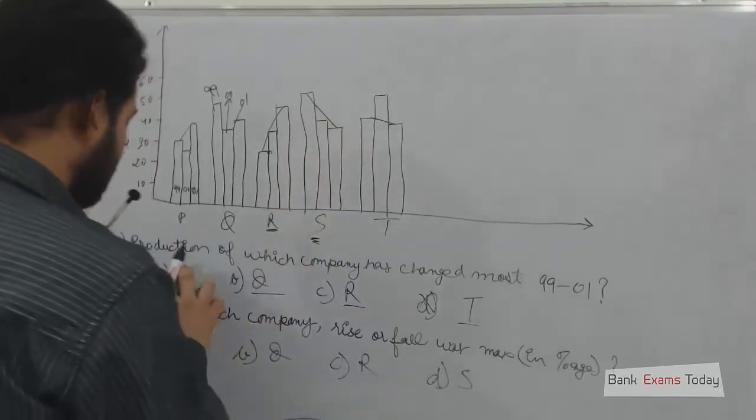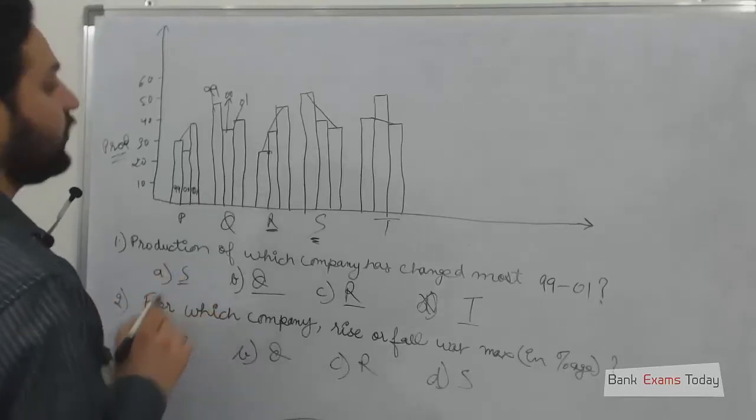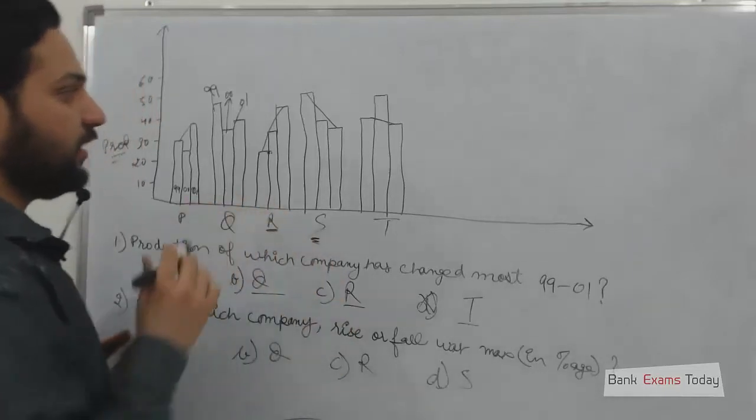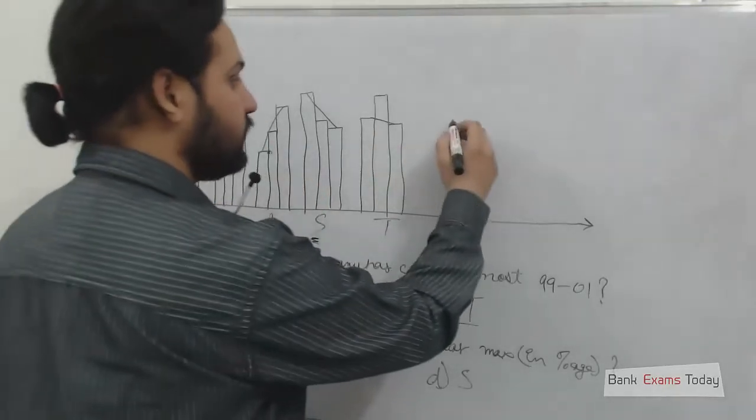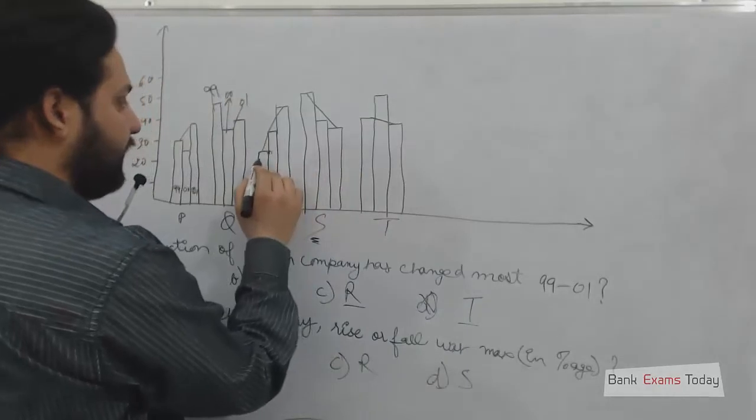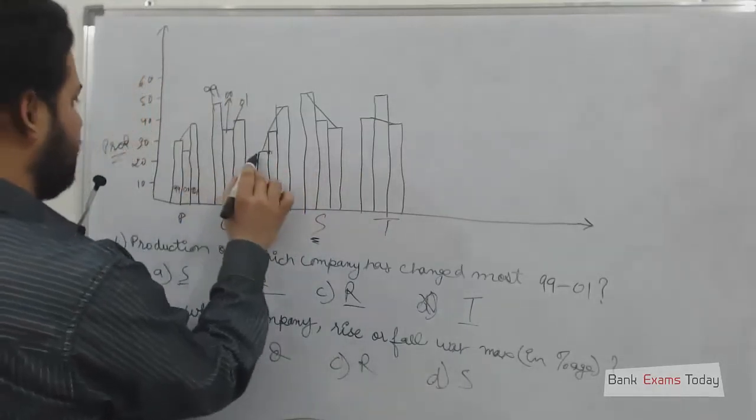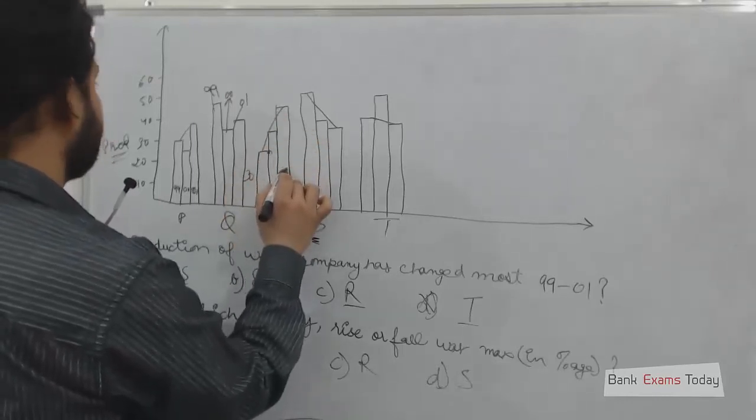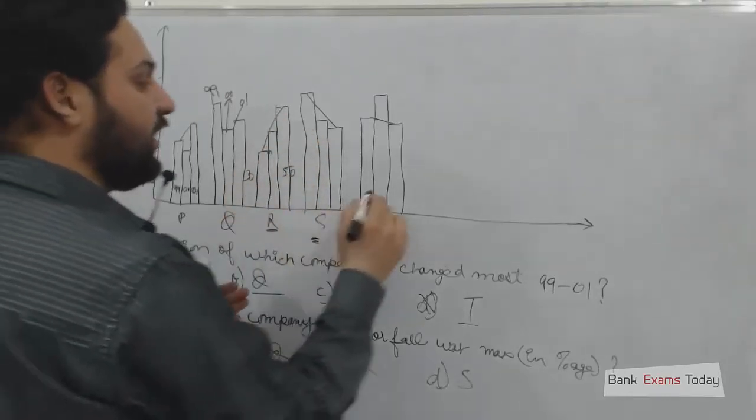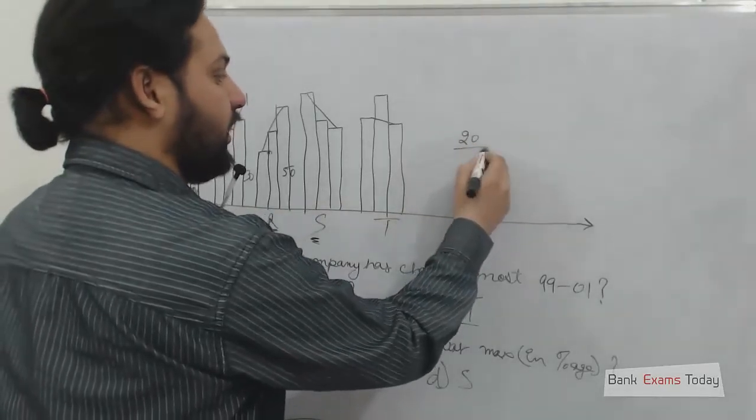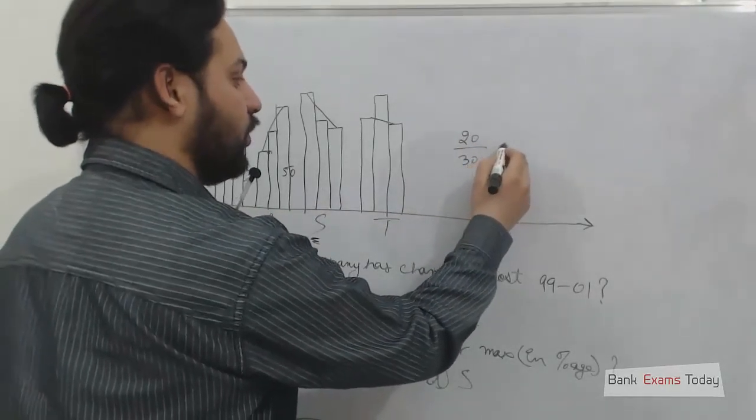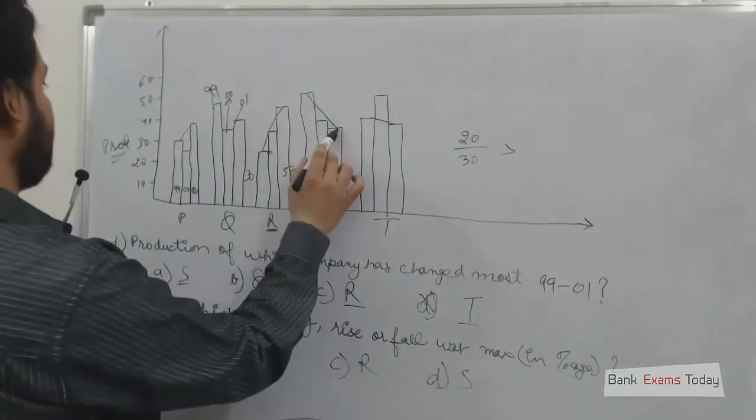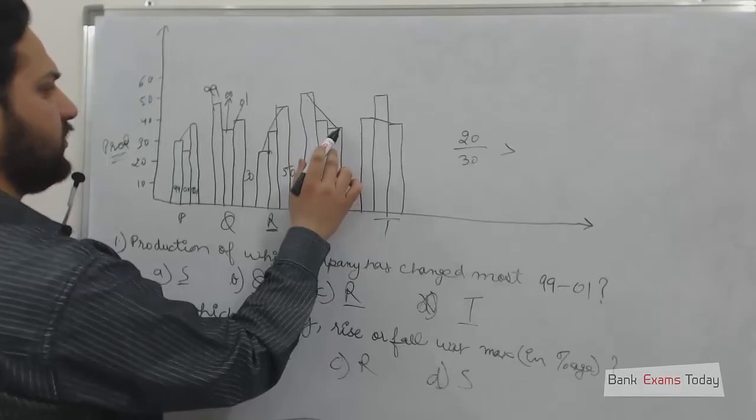Okay. If you consider company S as an option, there is a similar change. Same as I said in the starting of the video. If it is 30 and this one is 50, so there is an increase of 20. 20 of 30 is more than 50, and this one is, I think, 40.